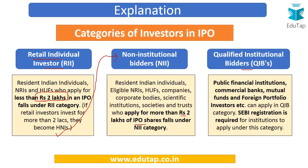Qualified institutional bidders include institutions like public financial institutions, for example ICICI Bank, IDBI, commercial banks, mutual funds, and foreign portfolio investors. The key difference between QIBs and the other two categories is that QIBs have to obtain a prior registration from SEBI for investing in an IPO. So broadly, retail investors, those investing more than rupees 2 lakh as non-institutional investors, and big institutions like IDBI and ICICI Bank as QIBs are the three categories.